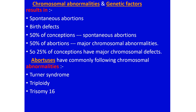In addition to the formation of abnormal babies, other problems due to chromosomal and genetic defects include spontaneous abortions — 50% of abortions are due to chromosomal abnormalities. Babies with birth defects account for 50% of conceptions ending in spontaneous abortion. Overall, 25% of all conceptions have major chromosomal defects. Commonly occurring chromosomal abnormalities in abortuses include Turner syndrome, triple X, and trisomy 16.